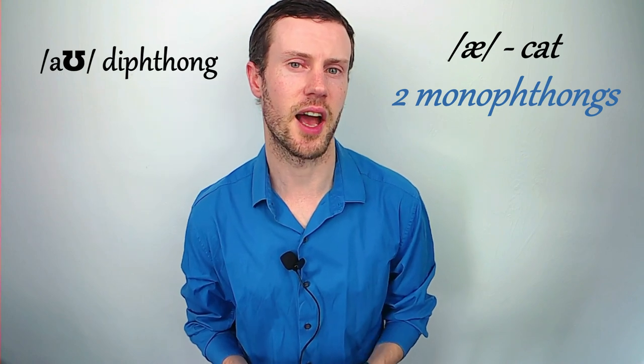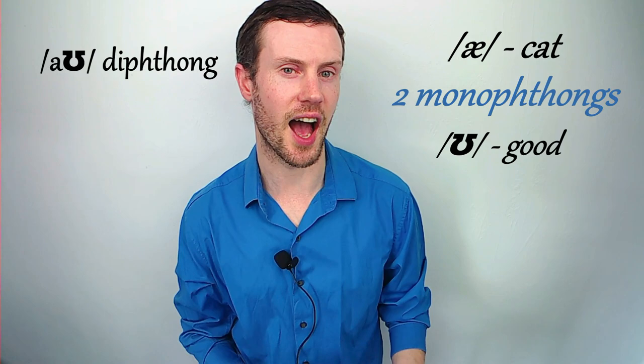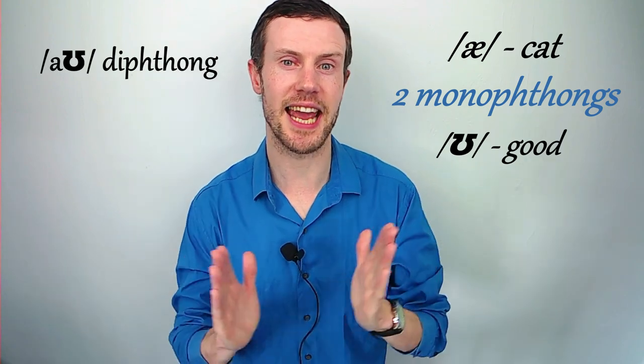Ao as in cat and oo as in good. Combining these, a, oo and sliding them together, we have the Ao diphthong. Ao, oo, ao as in how, now,